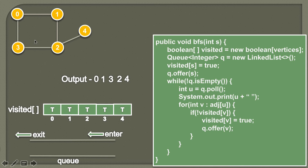We have now visited each and every node of this graph using the breadth first search algorithm. In the output we can see all nodes were visited level by level: level one was zero, level two had one and three, level three had two, and level four had four. This was a demonstration of the algorithm. Now let's go to Eclipse and see the working of this code.